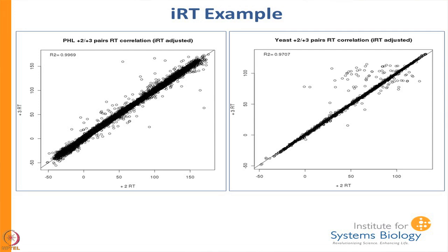Here are two libraries from the SWATH Atlas. We are looking at plus 2 and plus 3 charges. This one has a very good correlation — using IRT peptides, everything is pretty much right along the diagonal. We have taken all the peptide ions where we have both plus 2 and plus 3 for exactly the same modified peptide and plotted them against each other. In a perfect world they lie on the axis, but there are some outliers, and the width is maybe plus or minus 3 to 5 minutes.